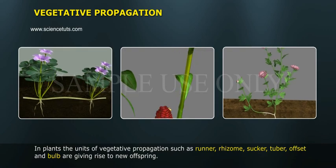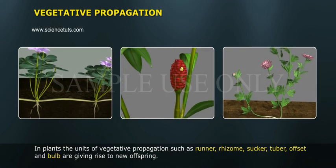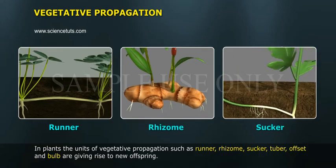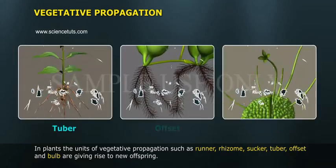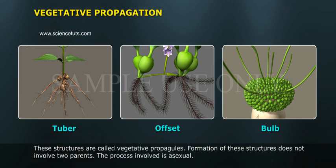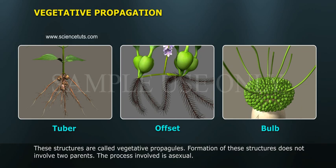Vegetative propagation in plants: the units of vegetative propagation such as runner, rhizome, sucker, tuber, offset, and bulb give rise to new offspring. These structures are called vegetative propagules. Formation of these structures does not involve two parents — the process involved is asexual.